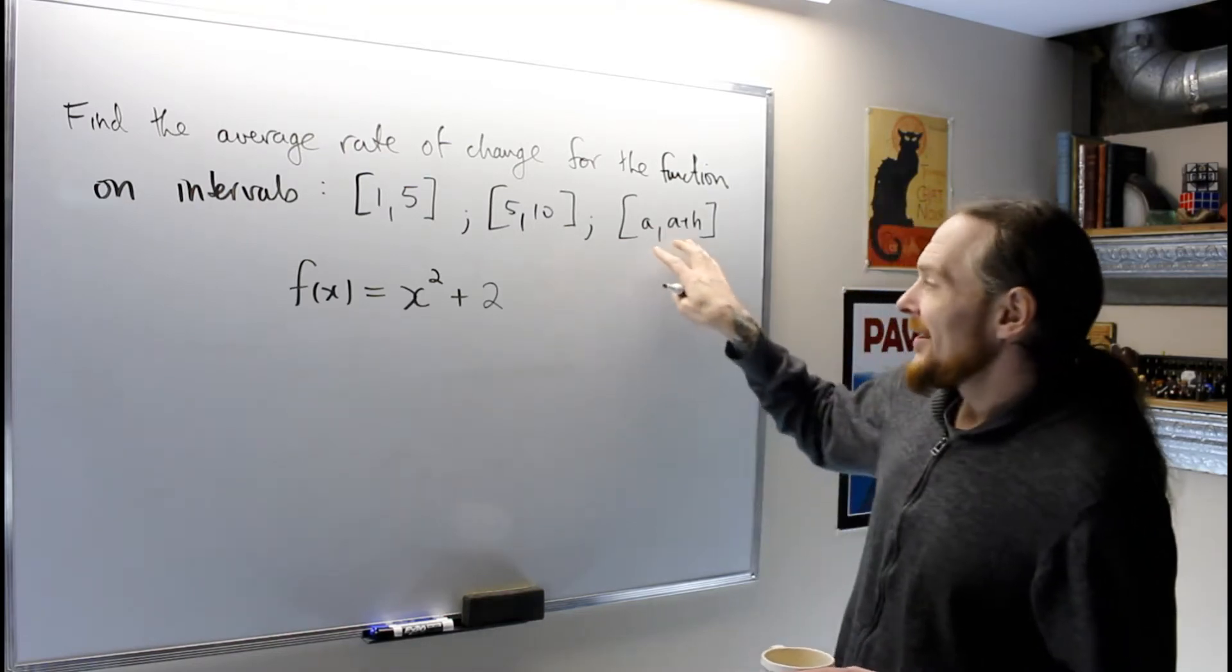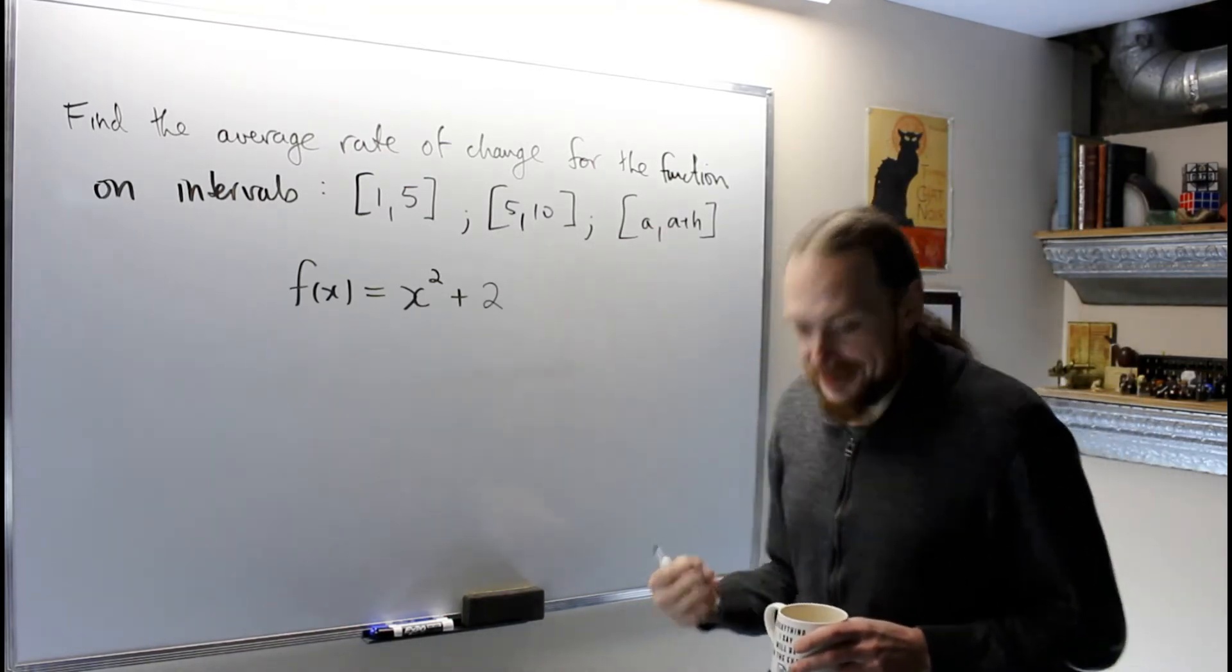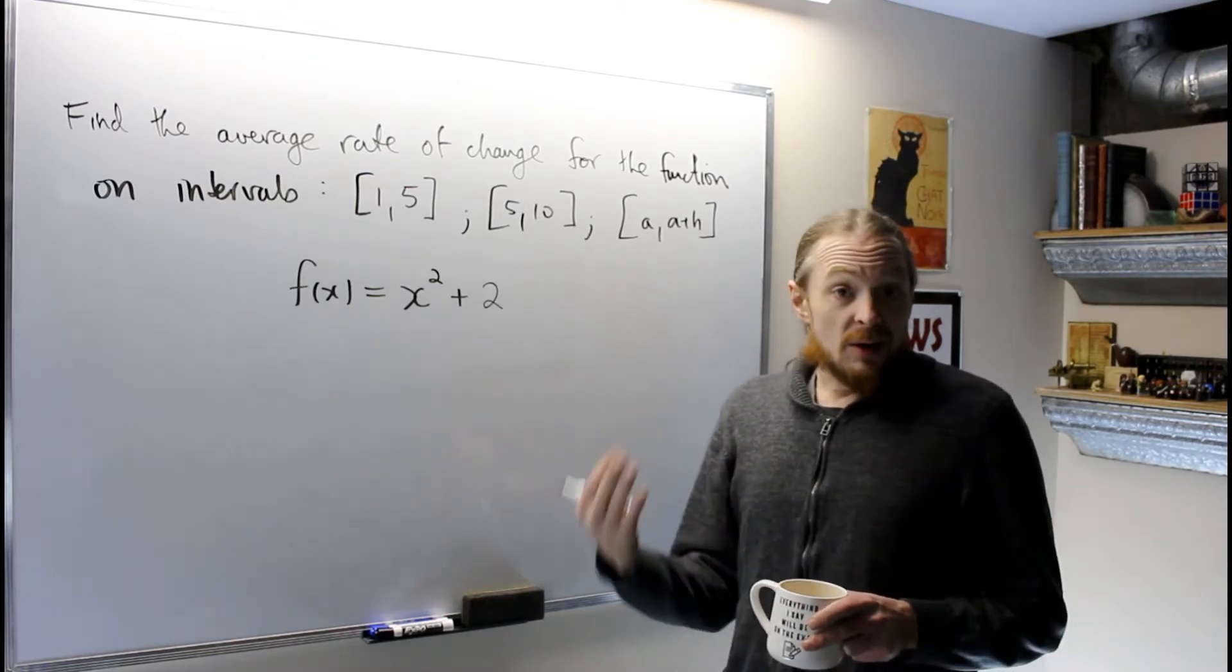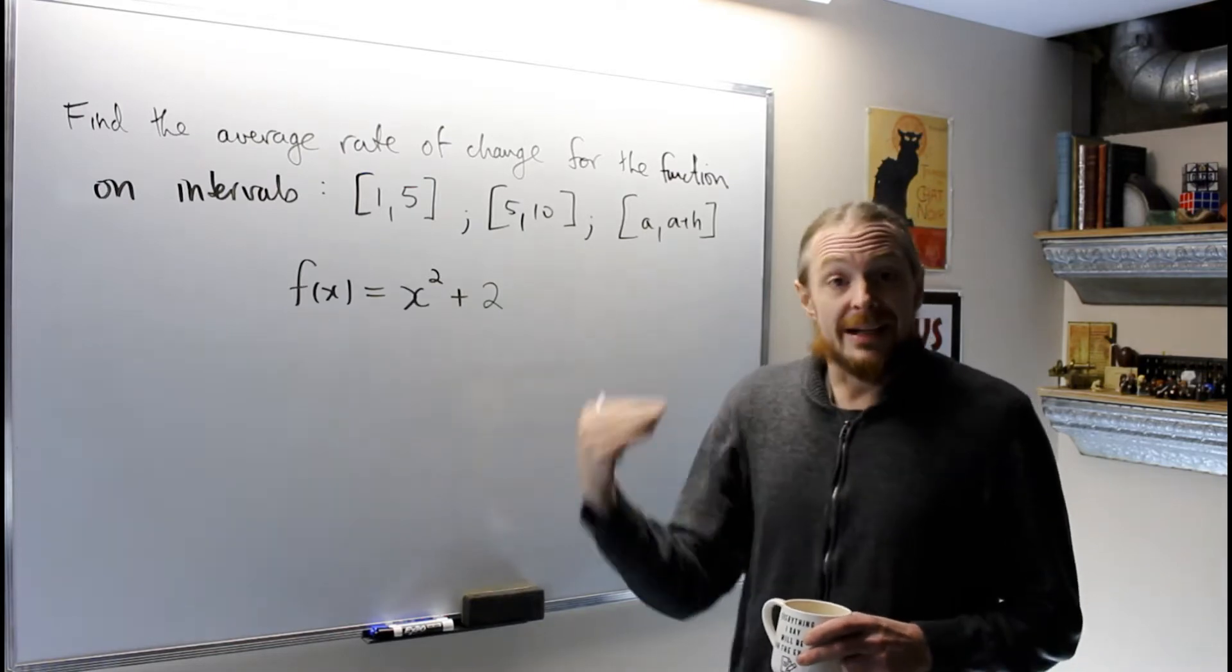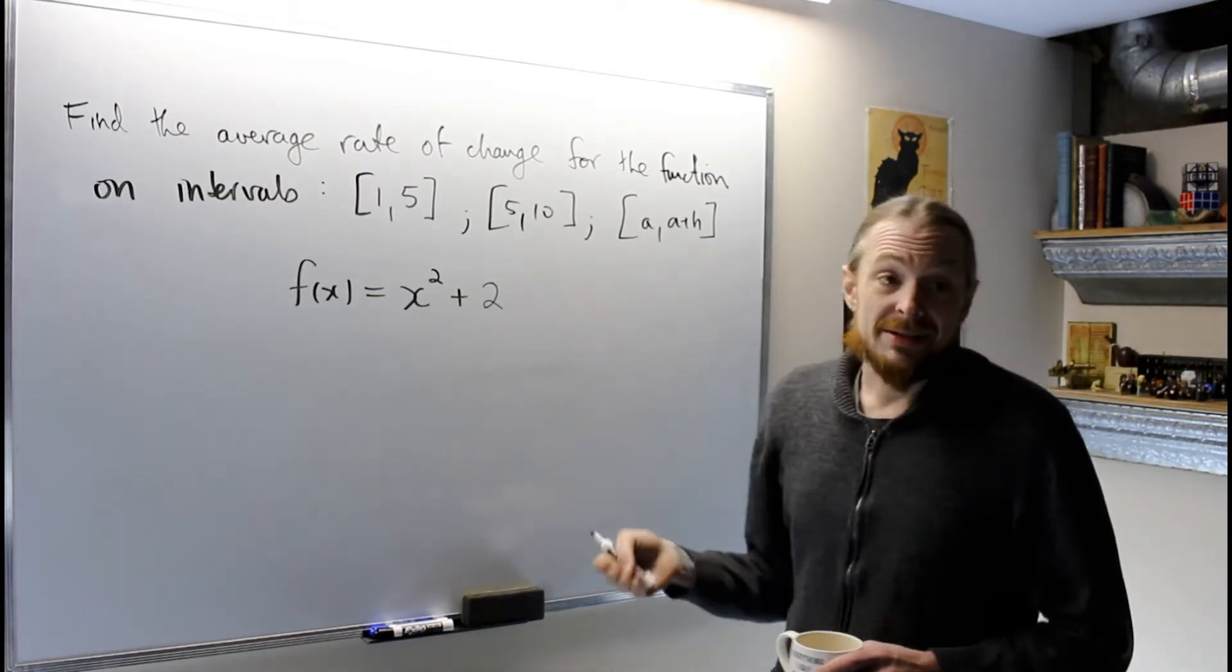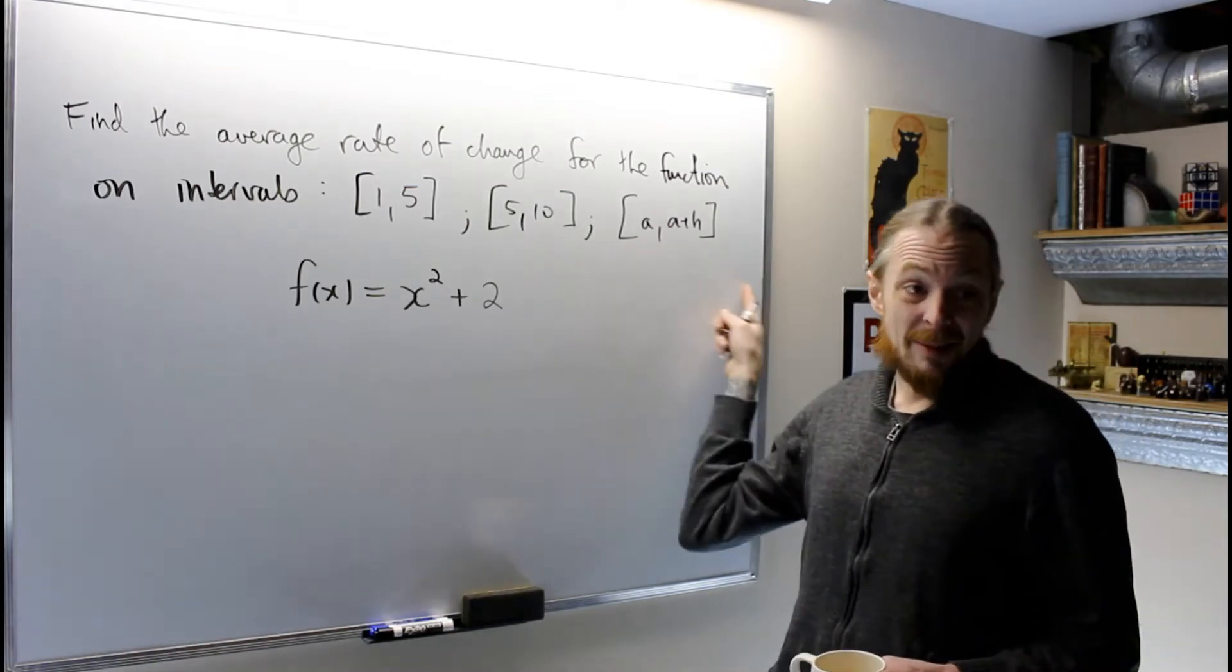Average rate of change is one of the more important sections in the first chapters on functions because the limiting process of average rate of change is the definition of derivative. This calculation is extremely useful, especially when we do the a, a plus h interval—that's setting us up.